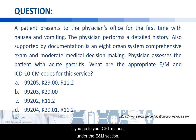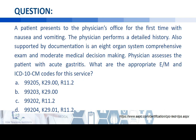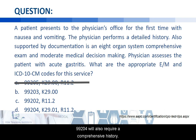That being the case, if you go to your CPT manual under the E&M section, you will see the key components required for each level under new patient. First to be eliminated is Letter A — 99205 requires a comprehensive history, so it's already out. Next to be eliminated is Letter D — 99204 also requires a comprehensive history, and in this visit the history is only detailed.